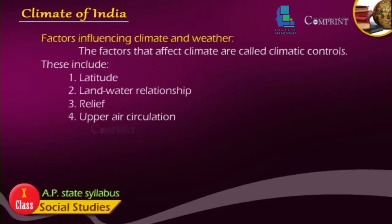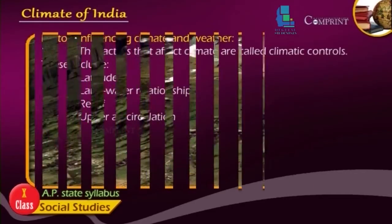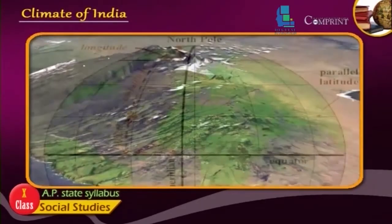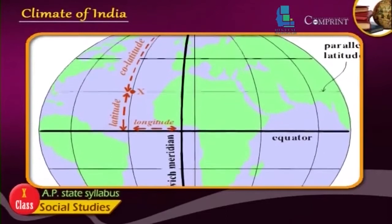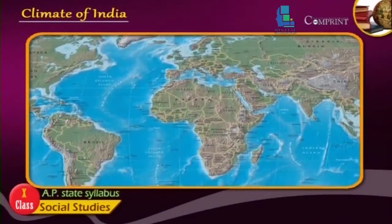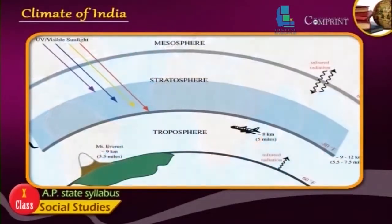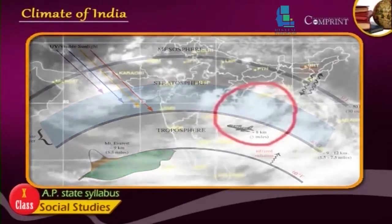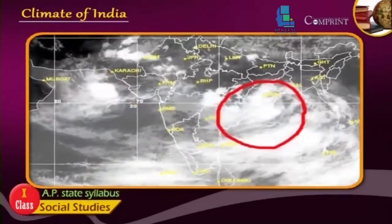The factors that affect climate are called climatic controls. These include latitude, land-water relationship, relief, and upper air circulation.